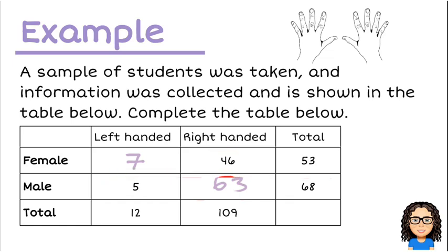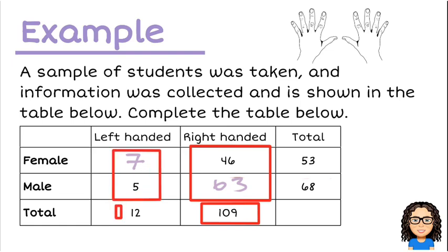Okay, so for example, I could have looked and said 46 plus 63 has to add up to 109, and 5 plus 7 has to add up to 12.